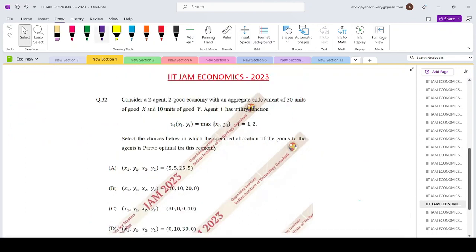Now let us come to question number 32 of the IIT JAM economics paper, May 23. This is also a question from section B. So there can be more than one correct option. So consider a two agent, two good economy with an aggregate endowment of 30 units for good X and 10 units for good Y.